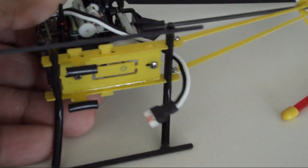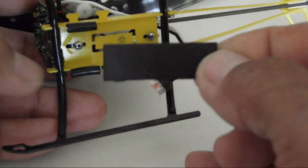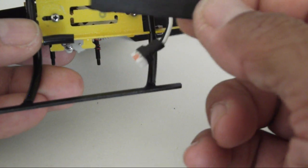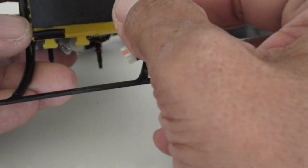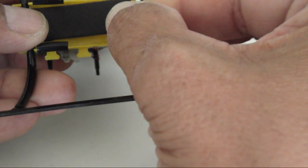Now once this is done, what you want to do is apply the pad that is also supplied in the kit. This is a foamy sticky pad and you want to cover that section there.